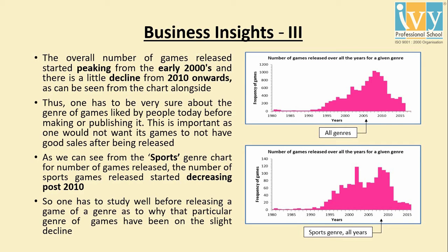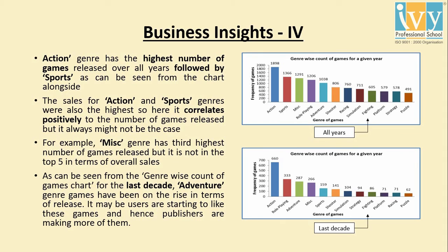The insights from the counts dashboard are: one has to be very sure about the genre of games liked by people today and then publish a game, as one would like to have good sales after the game is released. High sales in the action and sports genres correlates positively to the number of games released, but it is not always the case — MISC has the third largest number of games released but its overall sales were not in the top five.